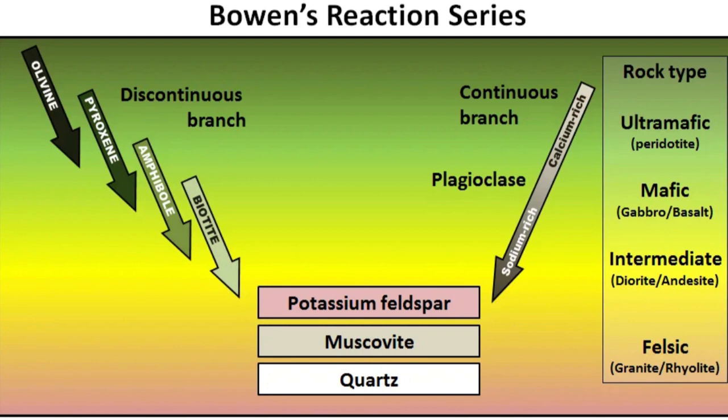Another way to think of the discontinuous series is that the composition occurs within a wide range of chemical compositions and within a wide range of silicate structures. For example, olivine is a nesosilicate, pyroxene is a single-chain inosilicate, amphibole is a double-chain inosilicate, and mica is a sheet silicate. Thus in the discontinuous series, the structures of the minerals vary from nesosilicate to sheet silicate.